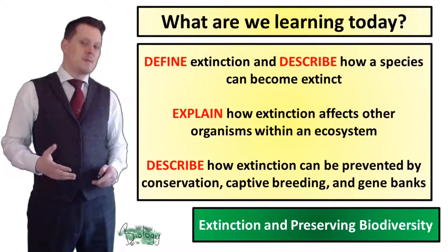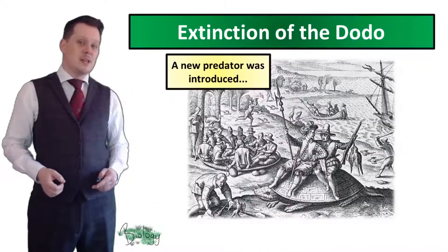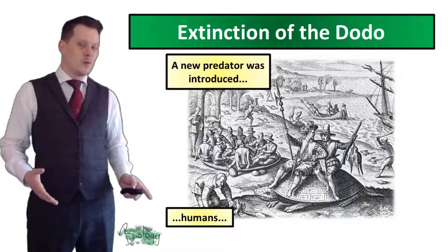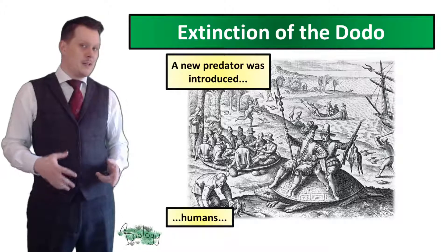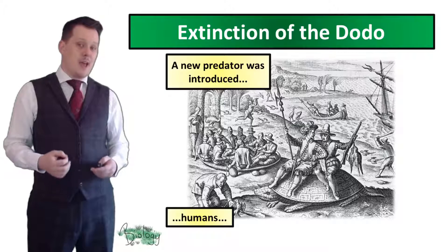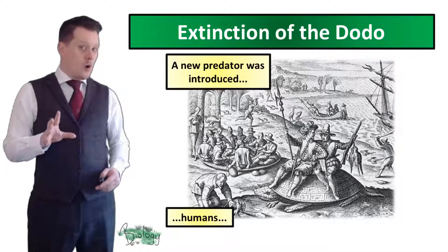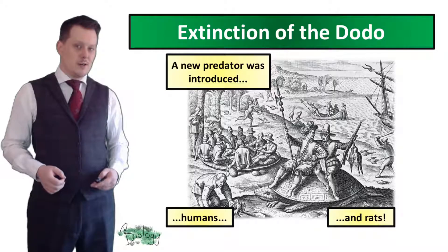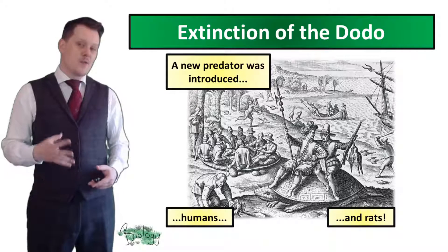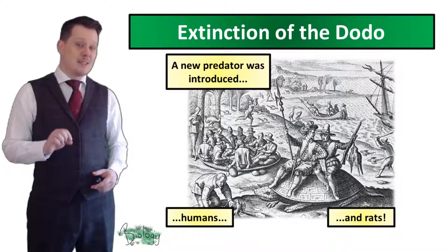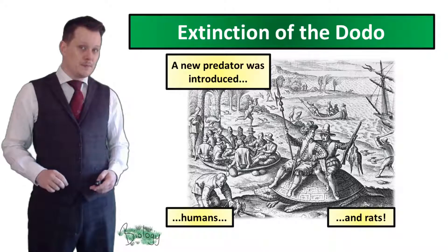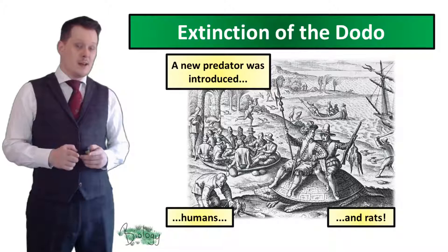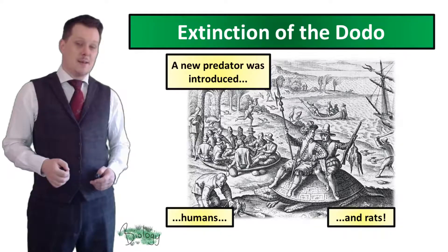The dodo became extinct because there was the introduction of a new predator. This new predator was us — humans — and it is documented that travellers ate lots of dodos. On their ships they also brought another predator: rats. The rats didn't eat the dodo, but they did eat the dodo eggs. With fewer dodos surviving and reproducing, the dodo eventually became extinct.